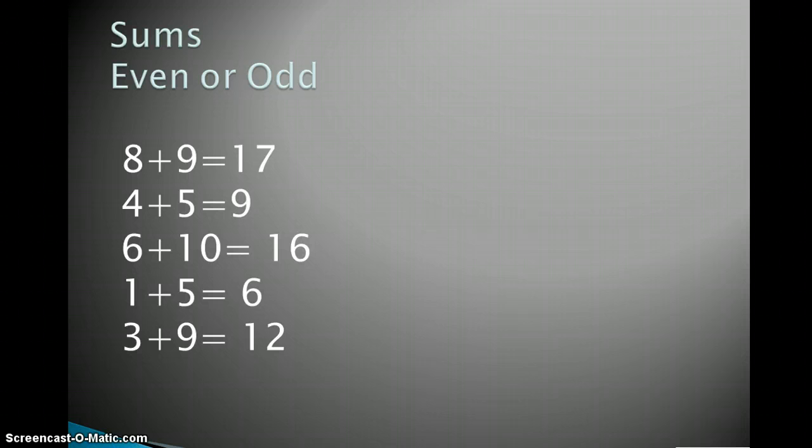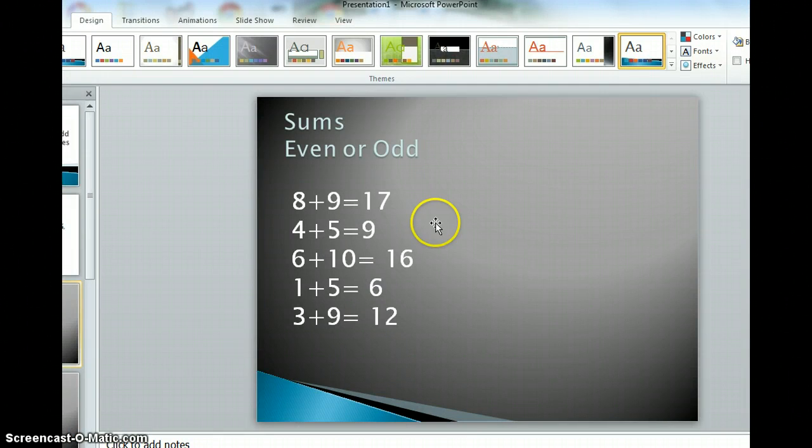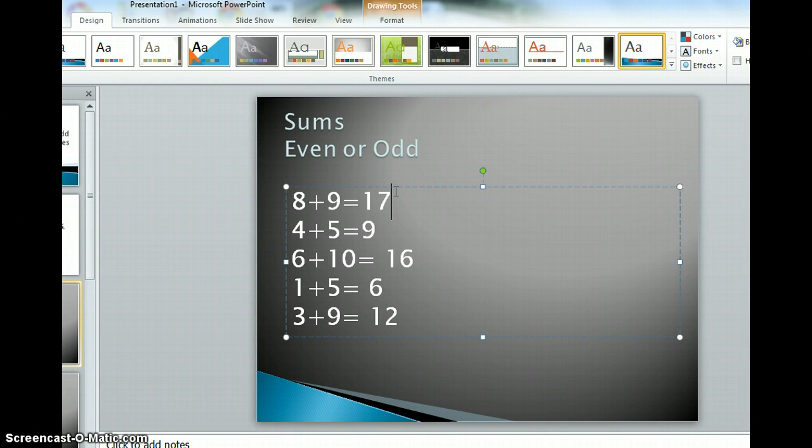We're going to start with sums and think about whether they're even or odd. So 8 plus 9 is 17. 17 is an odd number because there is a 7 in the ones place, so that is odd. If we do 4 plus 5, that's 9, which is an odd number. Remember 1, 3, 5, 7, 9 are odd.